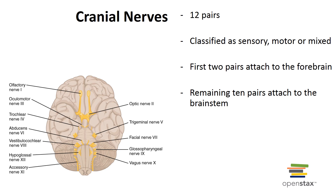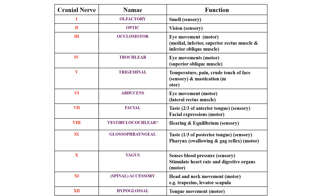The first two pairs of cranial nerves attach to the forebrain; the remaining 10 pairs attach to the brain stem. For each of the 12 cranial nerves you will need to know the name, number, function, and whether it is sensory, motor, or mixed.